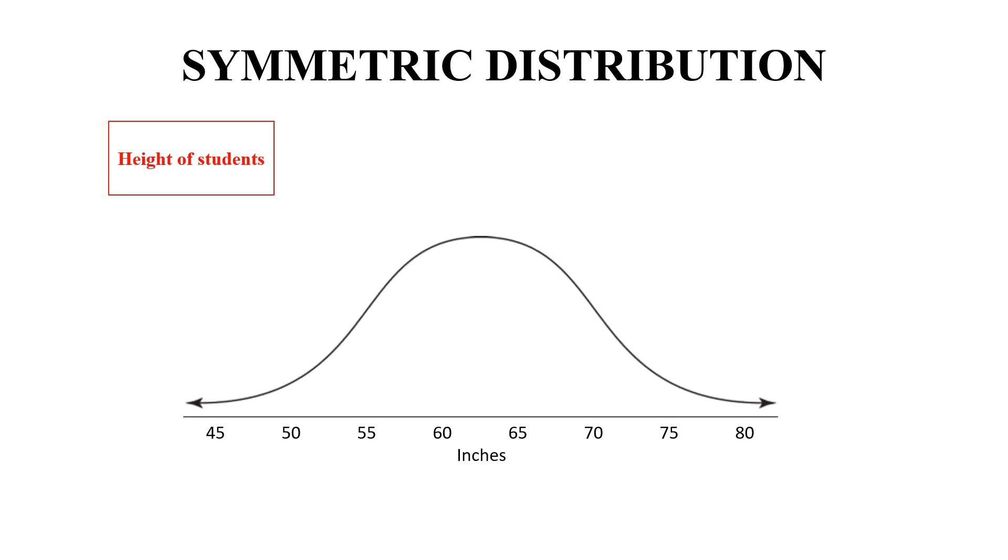If we plot the number of students on this axis, then this is the data we get. Maximum at 62.5 inches, equally distributed on both sides of 62.5, which is the central value in this point as the maximum.